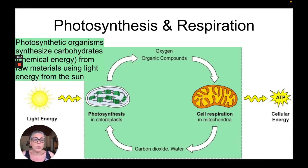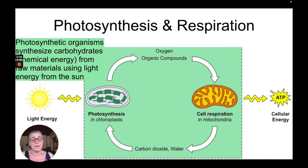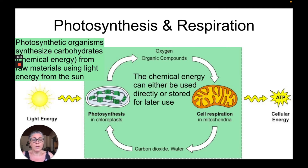Photosynthetic organisms such as the ones we've previously seen are going to synthesize carbohydrates — that is chemical energy — and they're going to use raw materials of carbon dioxide and water by using light energy from the sun in order to create chemical energy and release oxygen. The chemical energy is called organic compounds, and hopefully we know that that is glucose. The plants can either use the chemical energy or they can store it for later.